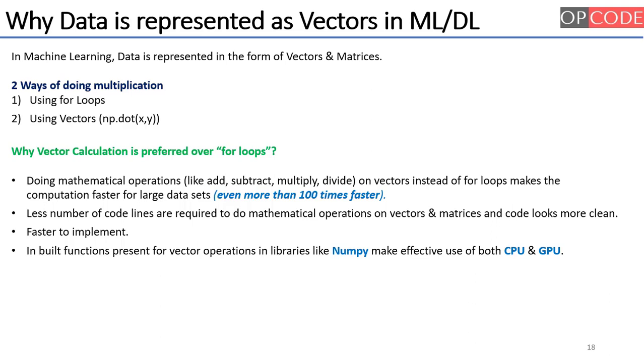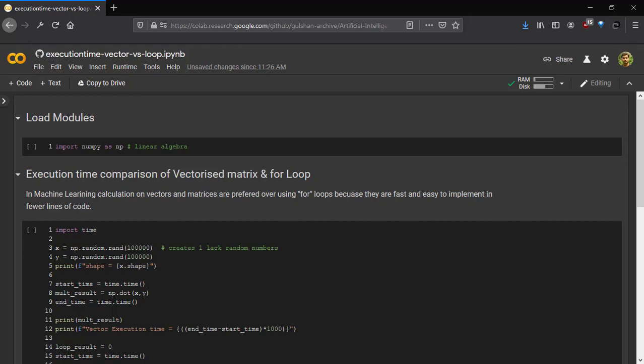Now let's jump into the Jupyter Notebook and see the difference between vector and loop. Now we are in the Jupyter Notebook. And as we have seen, that np.dot function is used to multiply two vectors. That's why we need to import the NumPy module.